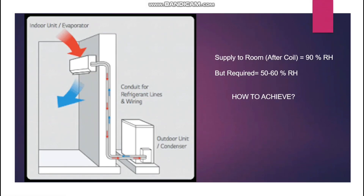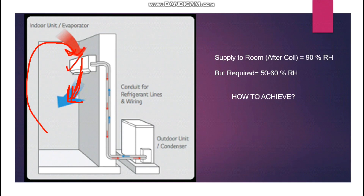Hello friends, welcome back. In today's video we are going to see how to understand the HVAC unit schedule. As you see in this image, the basic question that comes to everyone's mind is: we have the split unit here, air comes out from this unit, and the same air from the room comes back to the unit. The air coming from the unit we normally call off-coil, or after the coil, because we have the evaporator coil here. The air coming back is called the on-coil temperature.